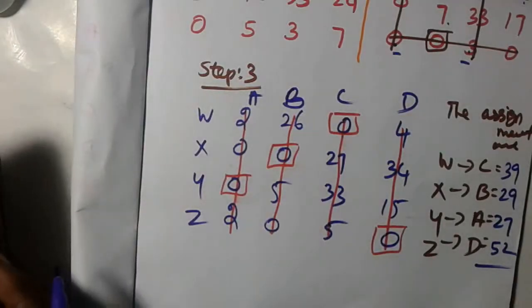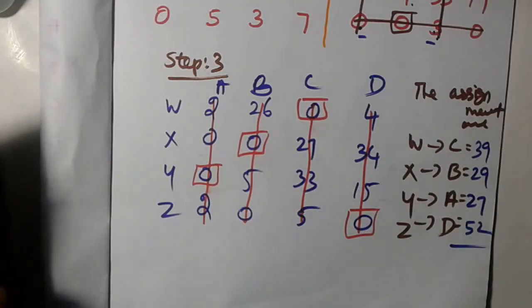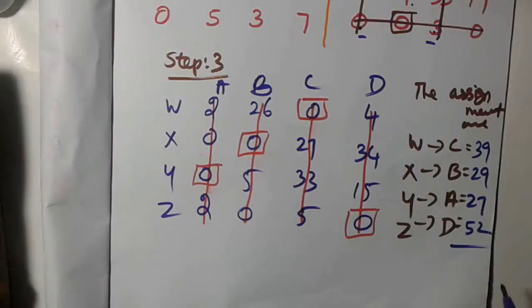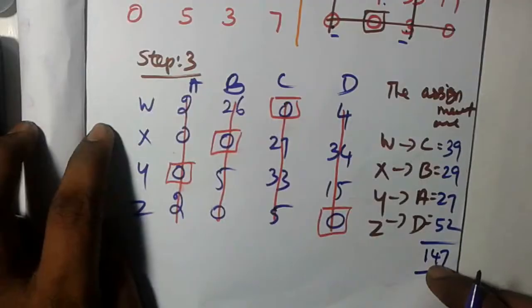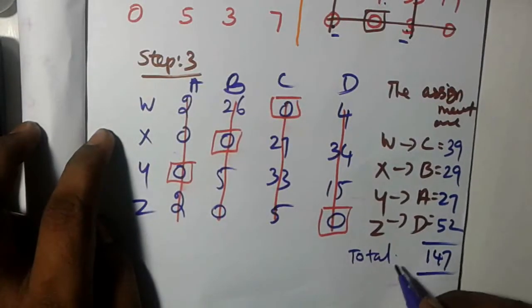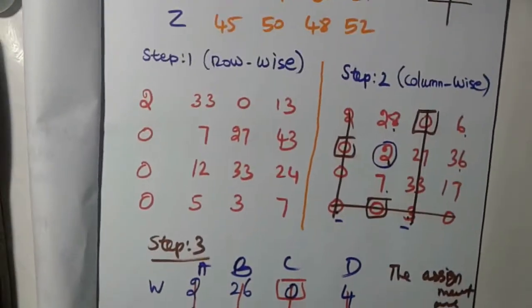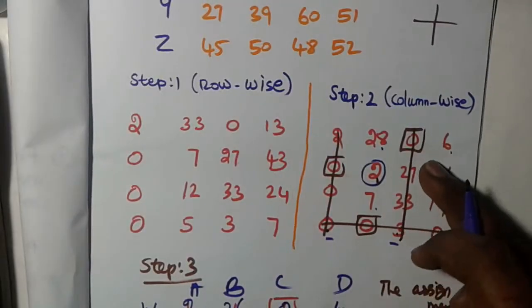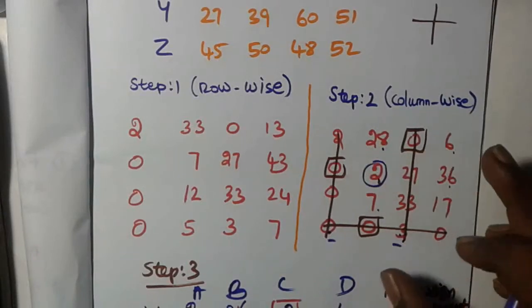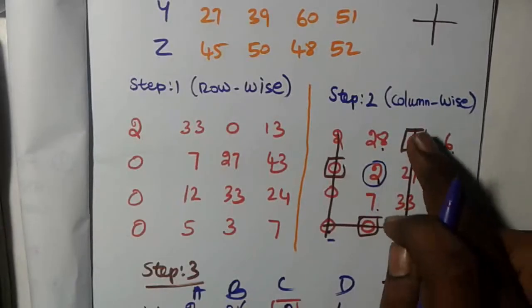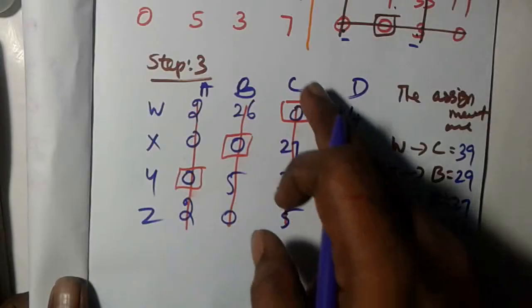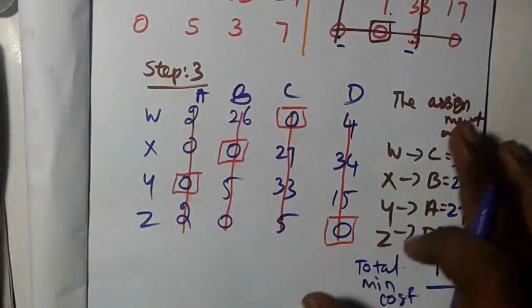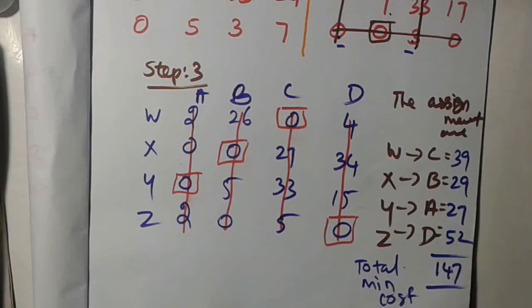The total minimum cost is calculated as: 39 plus 29 plus 27 plus 52, giving the total minimum cost or minimum time. This is the final answer for this assignment problem. Some problems may be solved after Step 2 directly. If you have any doubts, feel free to share. Like and subscribe to the channel.